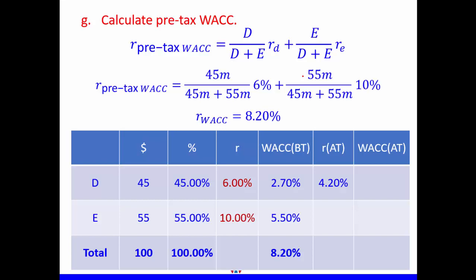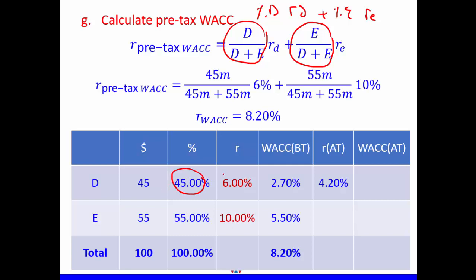Next, we calculate pre-tax WACC, or before-tax WACC. The formula is: percentage of debt times cost of debt, plus percentage of equity times cost of equity, where percentages refer to market values. So we take 45% times 6% (the before-tax cost of debt), which gives us 2.7%.